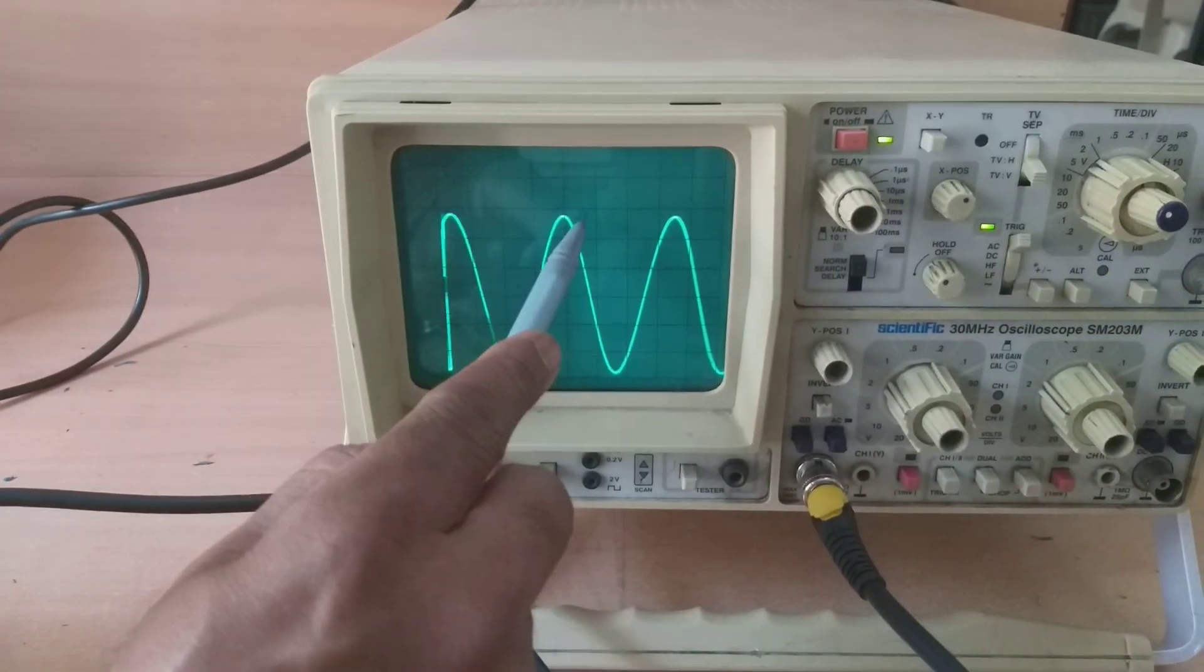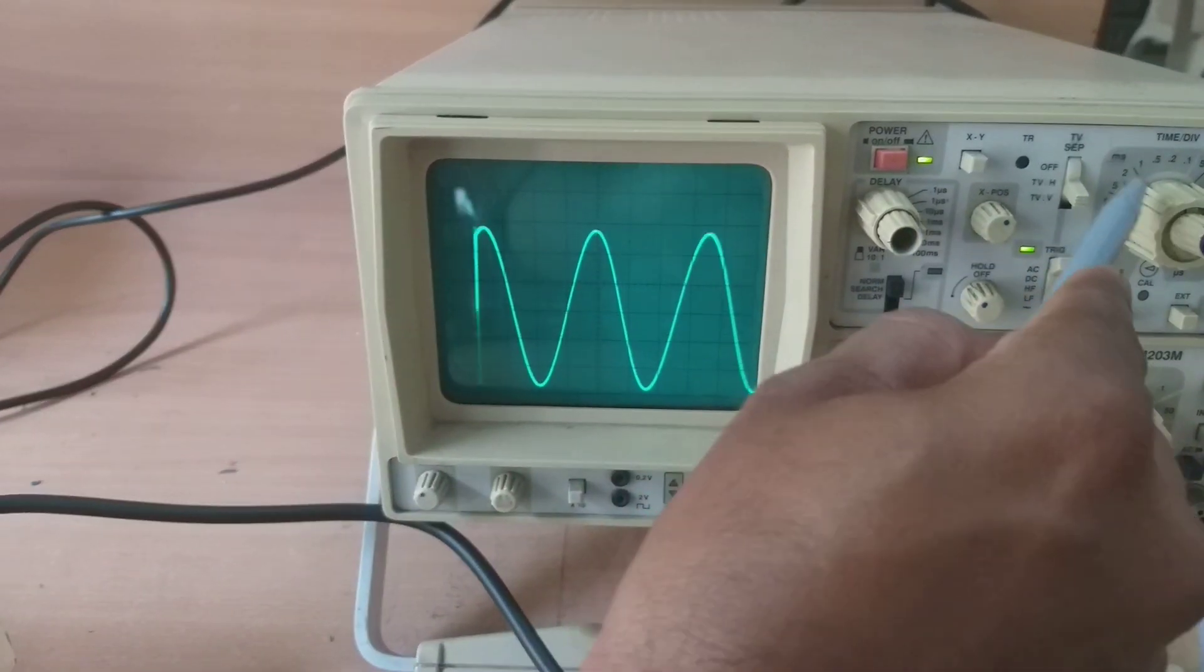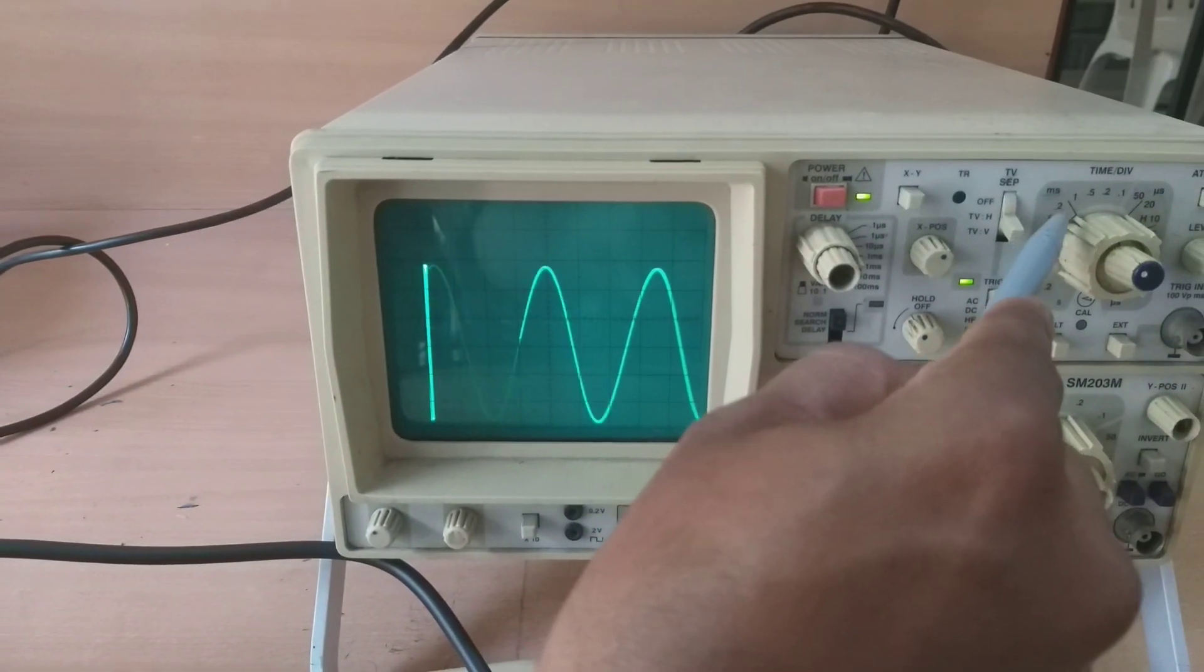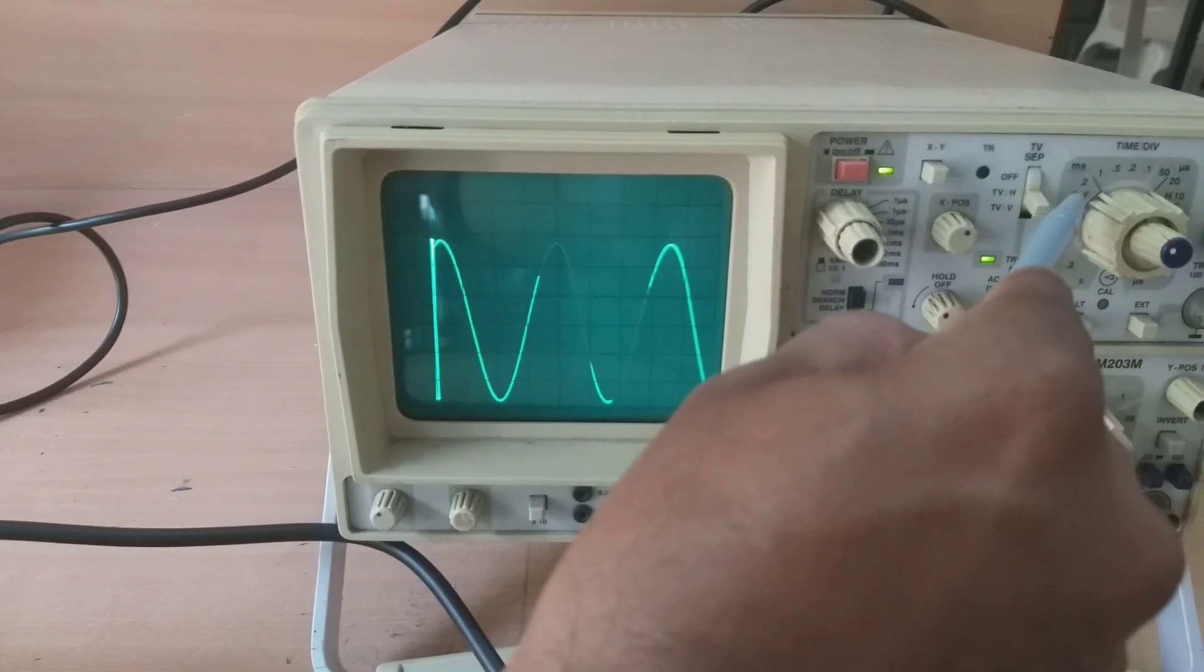Here it occupies 1, 2, 3, 3.2 divisions. Here 2 milliseconds per division is there. So 3.2 into 2 milliseconds, that means 6.4 milliseconds.